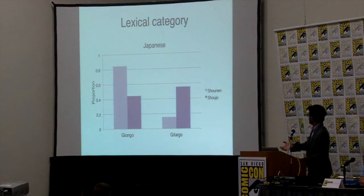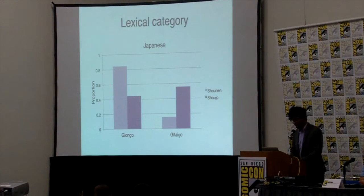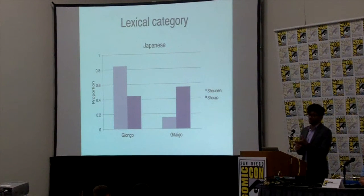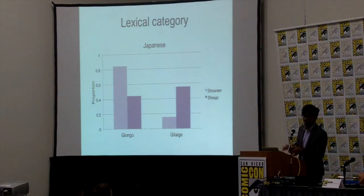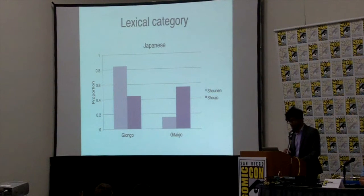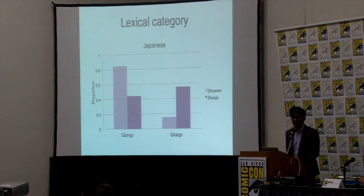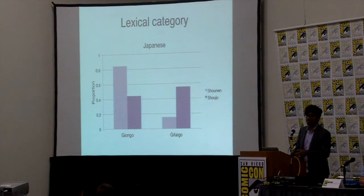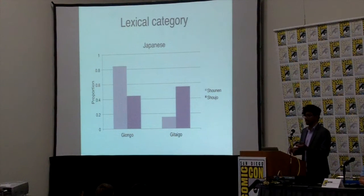On the side of Japanese genres, the discrepancy is a little less drastic — each genre features both kinds of sound effects. But shounen, or boys' manga, is dominated by onomatopoeia sound effects, while girls' manga is dominated by gitaigo, which indicates states, emotions, and actions.